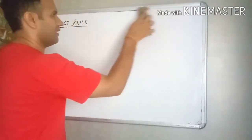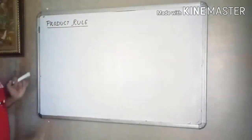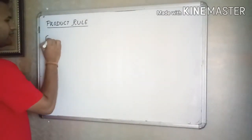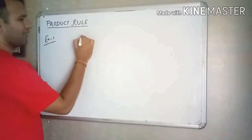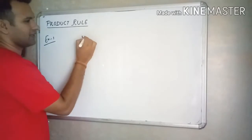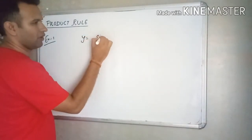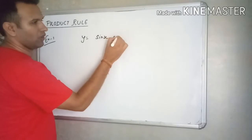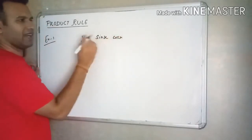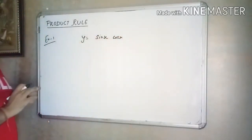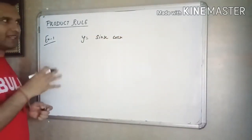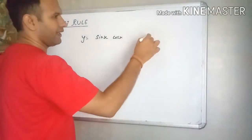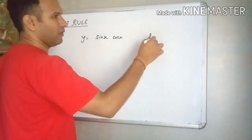Let us start with example number one. Suppose you have the function sin x into cos x — sin x multiplied with cos x — and you are asked to find dy by dx.